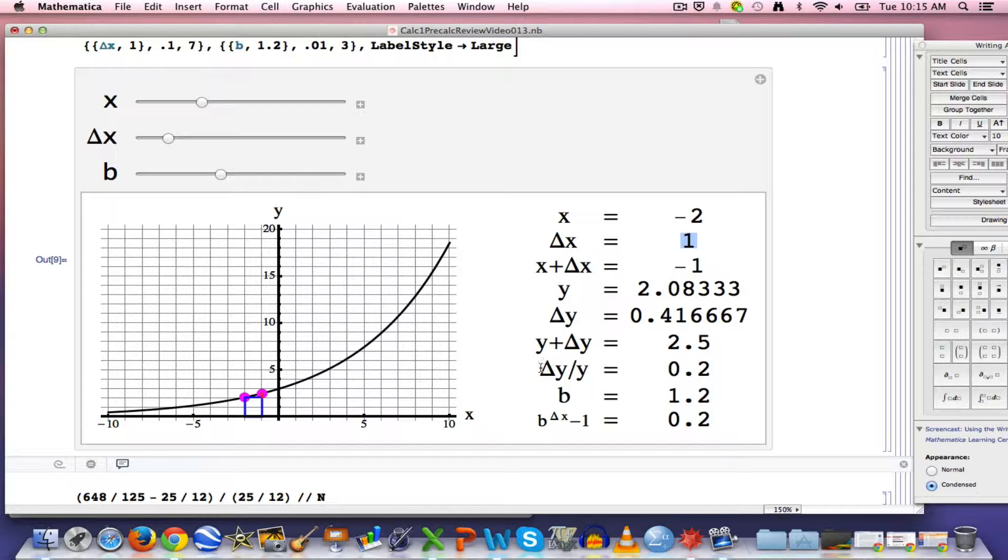How does it illustrate the general principle? The general principle is that the relative change in Y, delta Y over Y, in this case is .2, equals B to the delta X power minus 1. That also equals .2. So, with this particular example, you've got 20% relative change. The percent change in the function value is 20%.